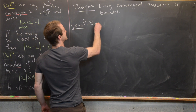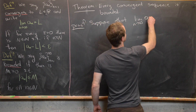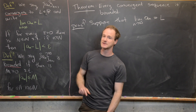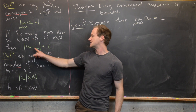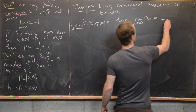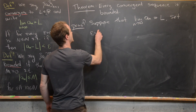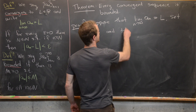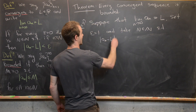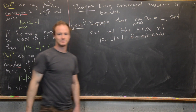We'll suppose that we have a convergent sequence — in other words, the limit as n goes to infinity of a_n equals L. What that means is for any epsilon we choose, we can find an N where the values of the sequence are within epsilon of that limiting value. We'll pick epsilon equal to 1 and take N, a natural number, such that |a_n minus L| is less than 1 for all little n bigger than or equal to capital N.